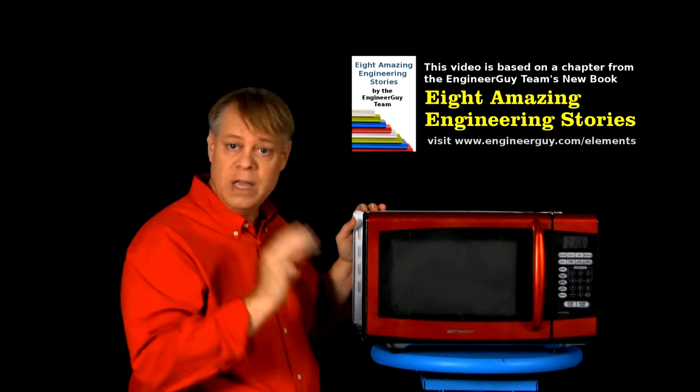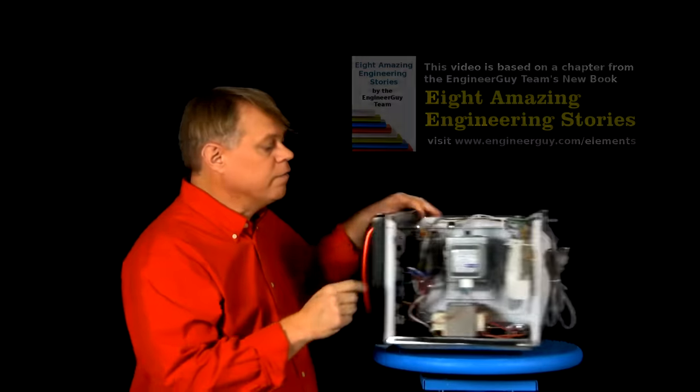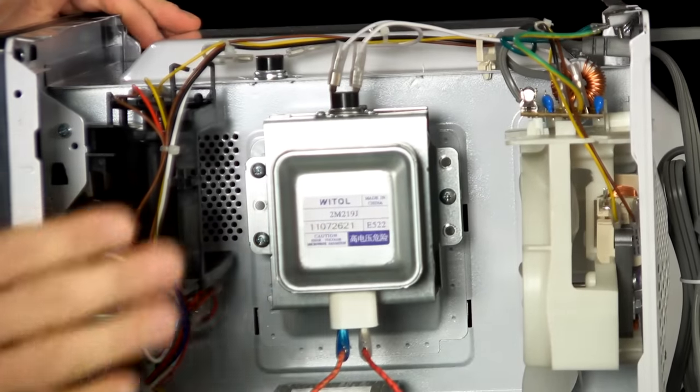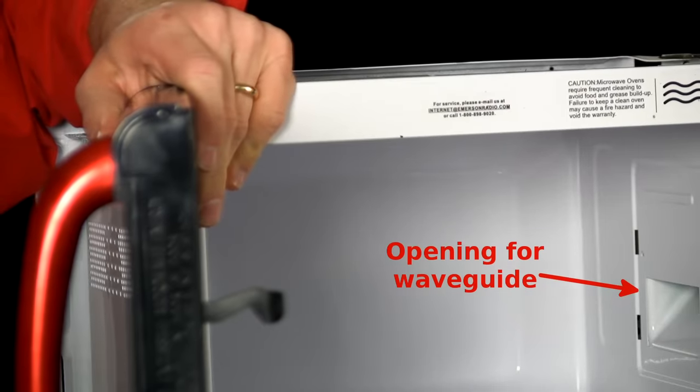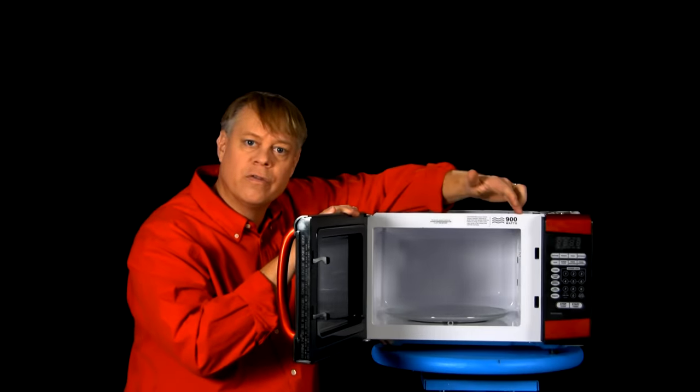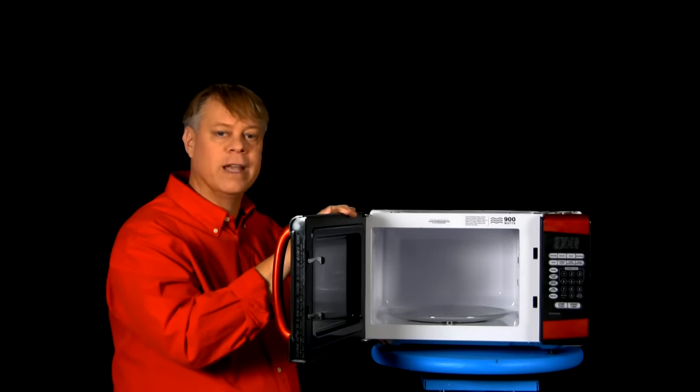A microwave contains three main components: a vacuum tube called a magnetron that generates the energy that heats food, a wave guide hidden in the wall to direct that energy to the food, and a chamber to hold the food and safely contain the microwave radiation.